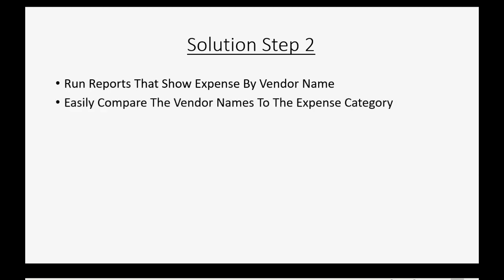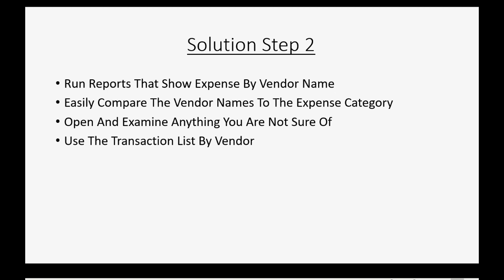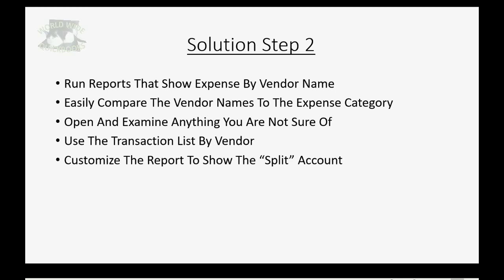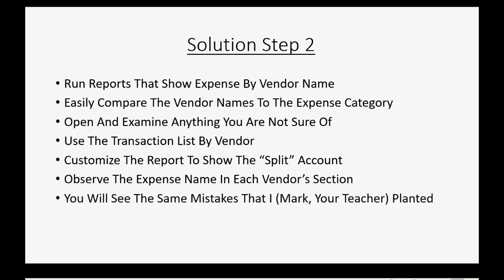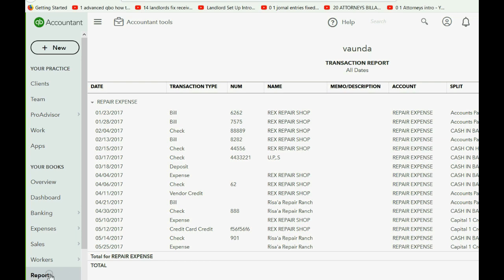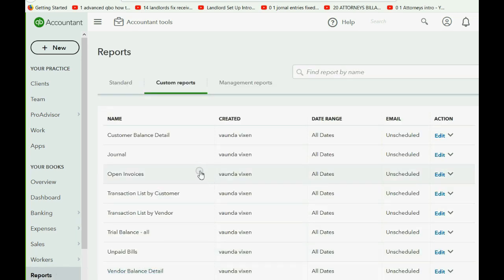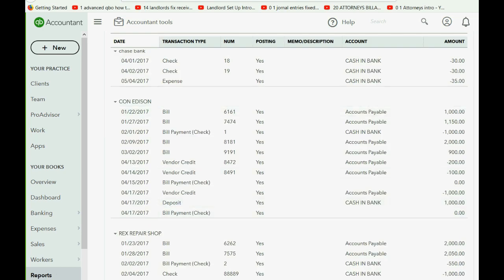The other method that will reveal these types of mistakes is to run reports that show expense by vendor name. You can easily compare the vendor names to the expense category on this report, then open and examine anything you're not sure of. To do this we will use the Transaction List by Vendor report, then customize the report to show the split account — because the split account is actually the expense or asset that goes with the vendor transaction. We click Reports, then Transaction List by Vendor.